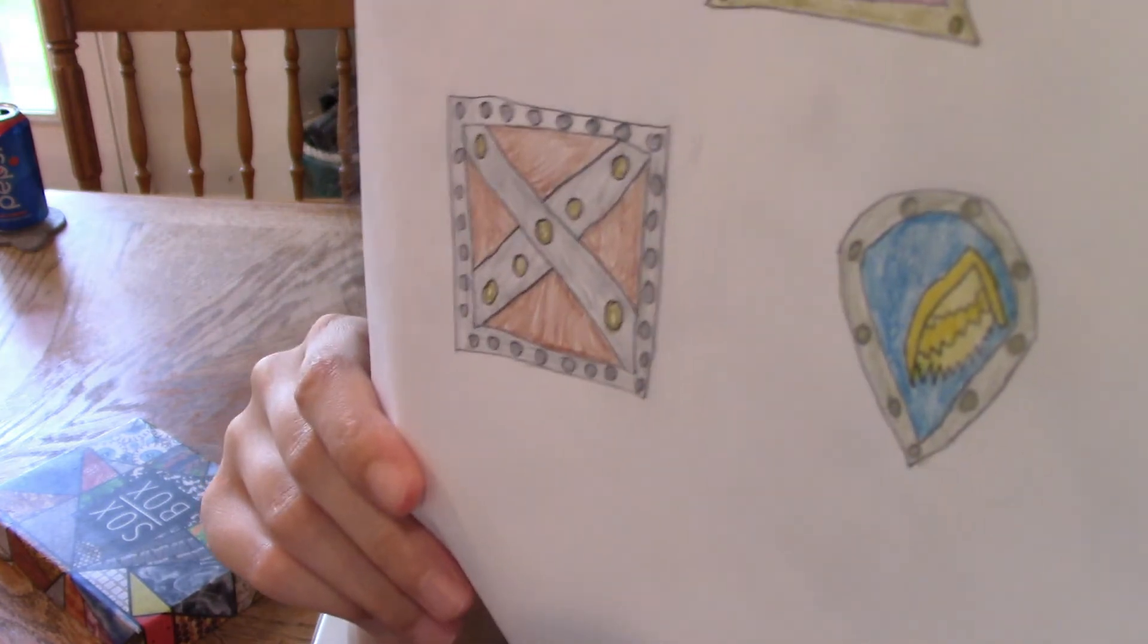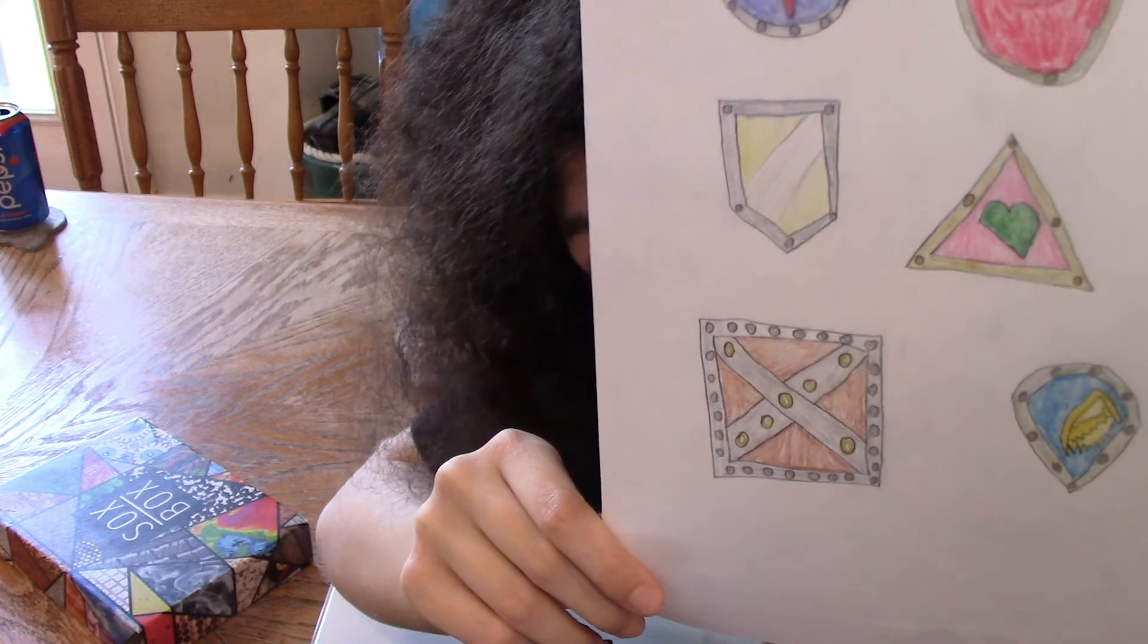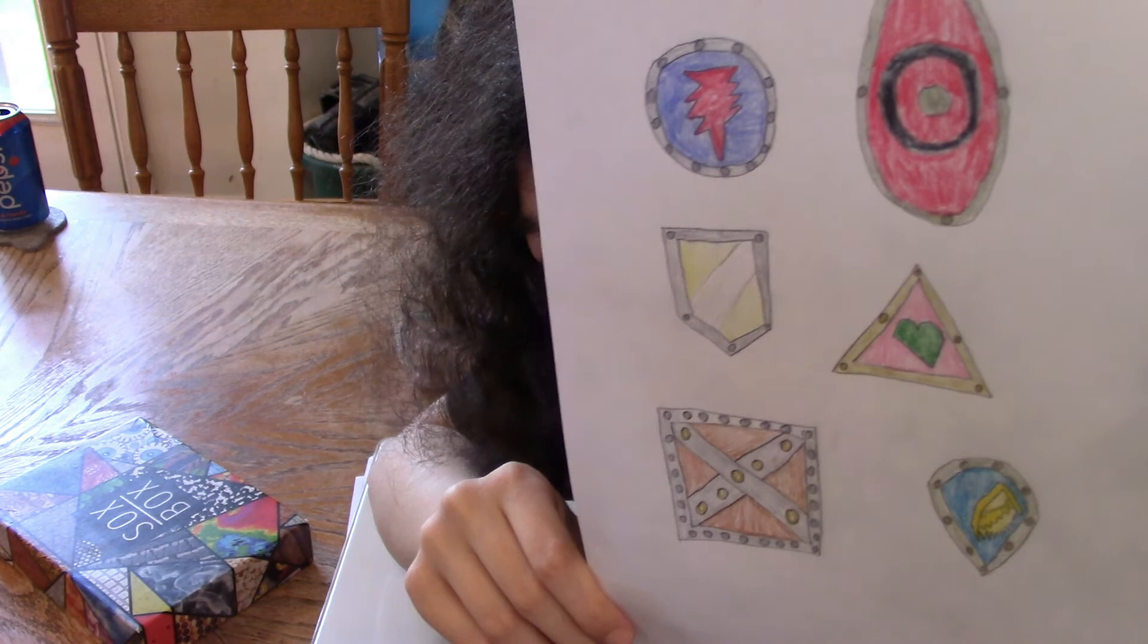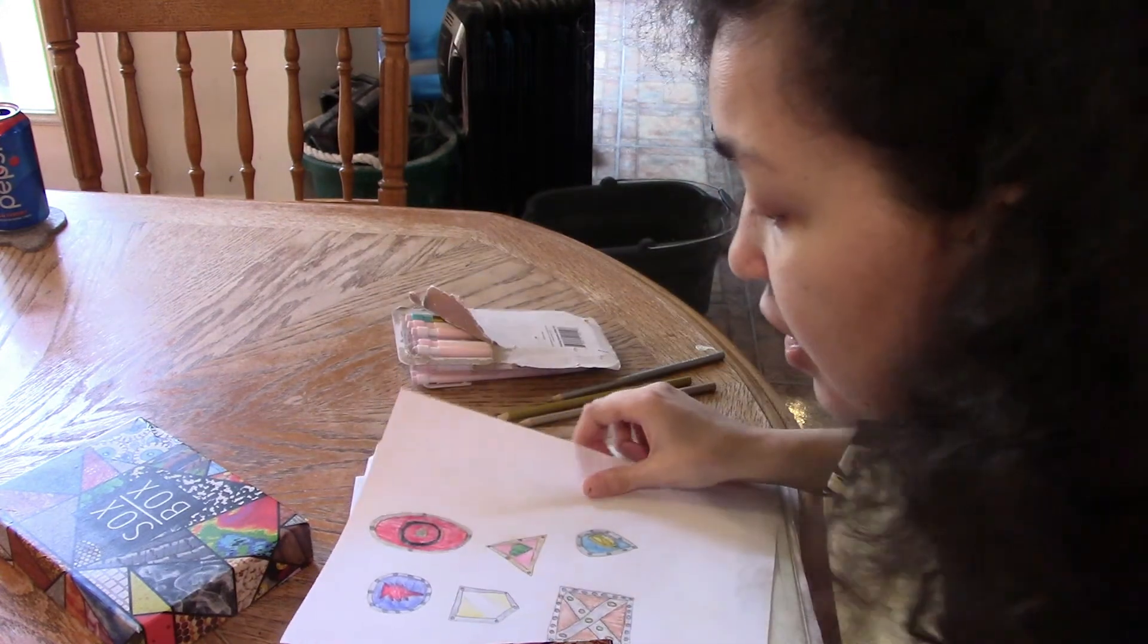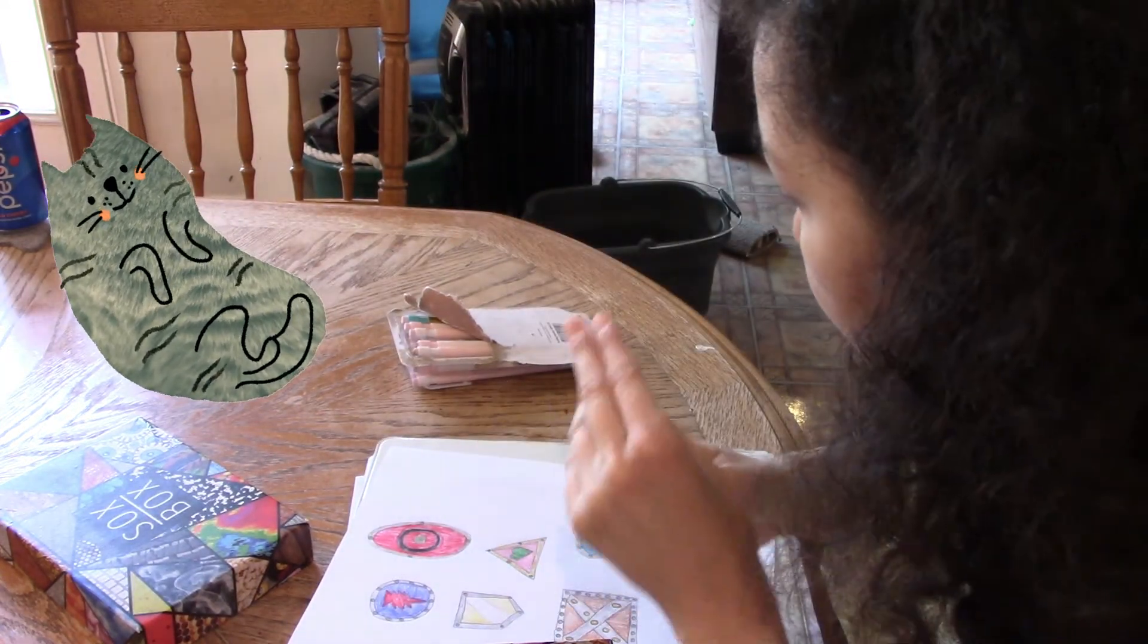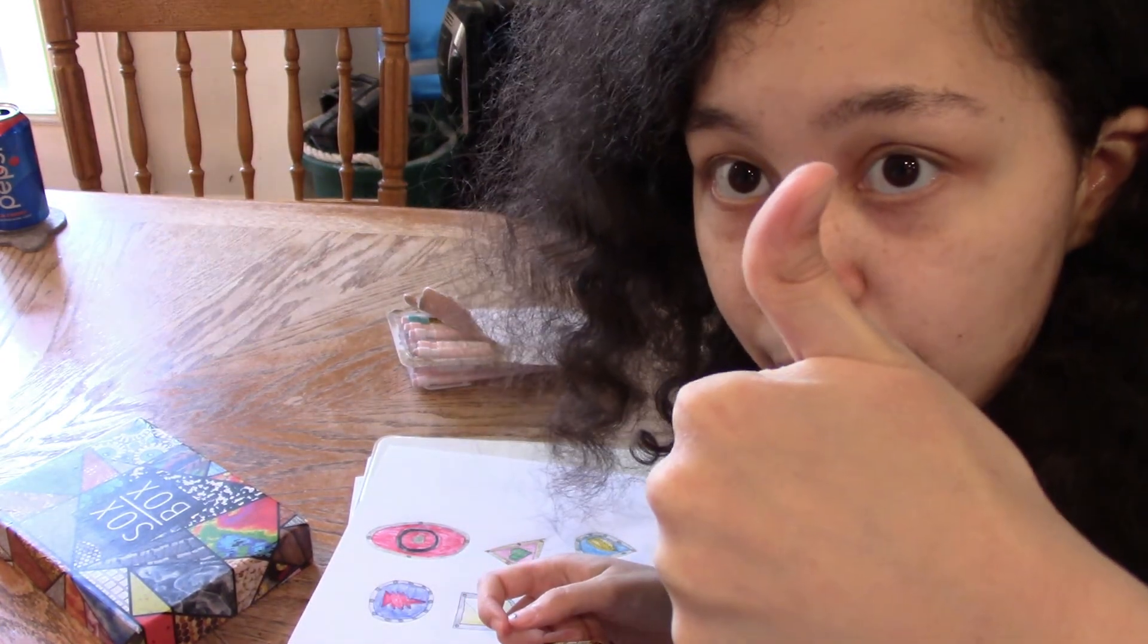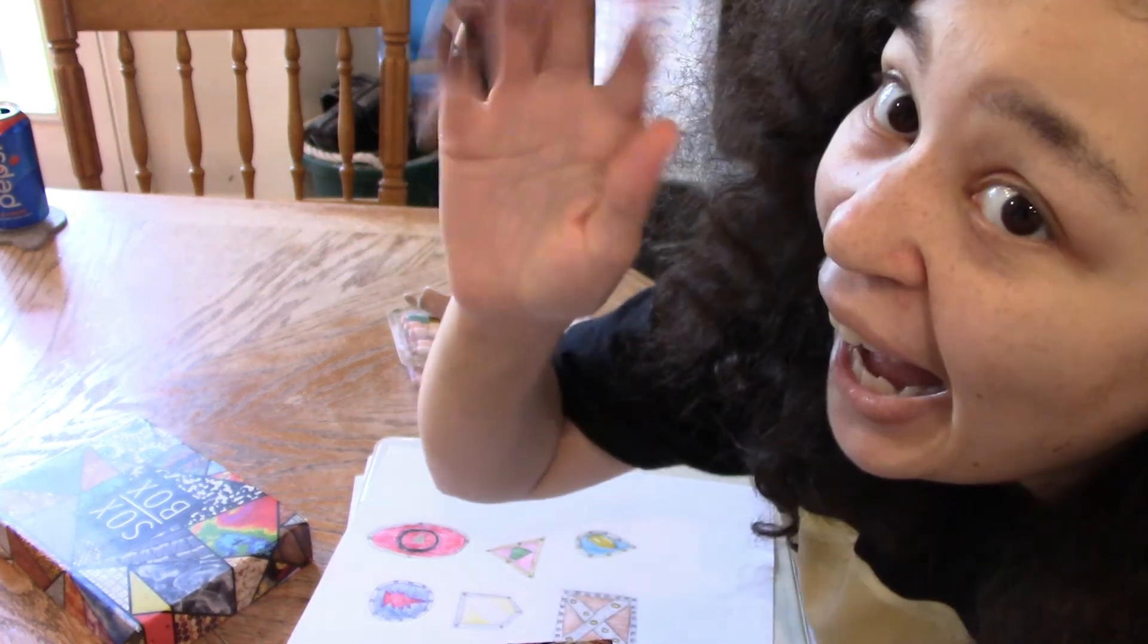And just like that we're all done. All six shields are colored in. If you have more then continue coloring. And so let me know in the comments which shield is your favorite and if you have any ideas for other things you'd like to see, let me draw for you guys. Let me know in the comments as well. If you like this video give me a thumbs up and remember to subscribe to the channel for more videos. Bye bye.